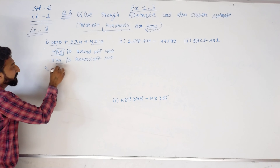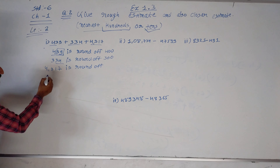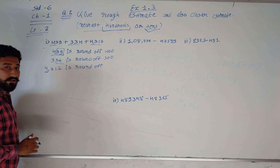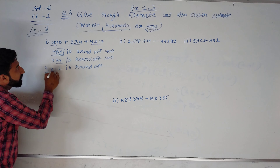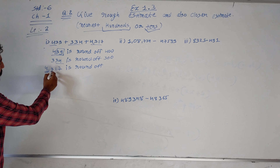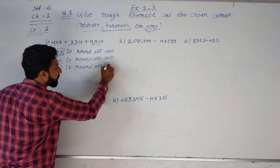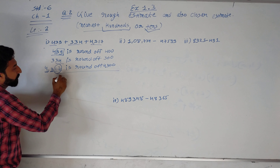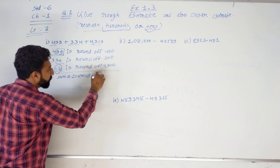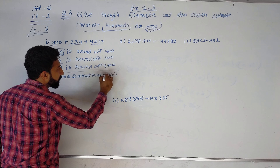4370 is round of — 70 is nearest to 300, so it becomes 4300. Now we get the addition. The sum of the estimated values: 4 plus 3 is 7, 7 plus 3 is 10, carrying one — it becomes 5000.